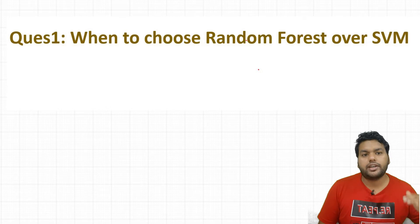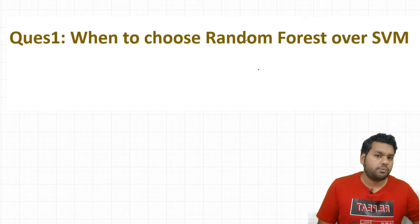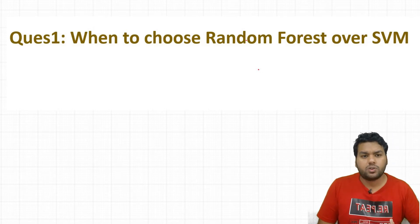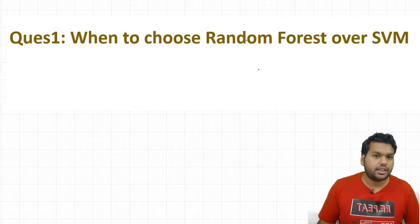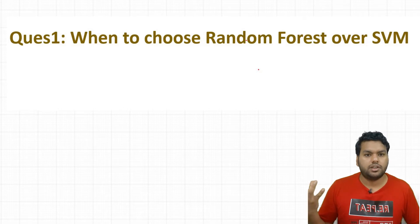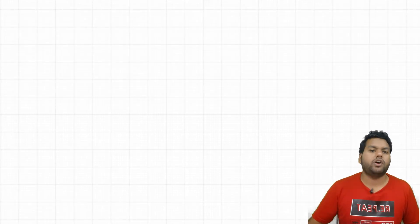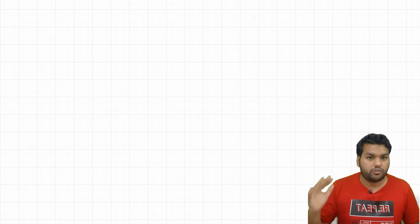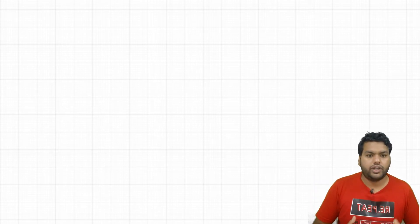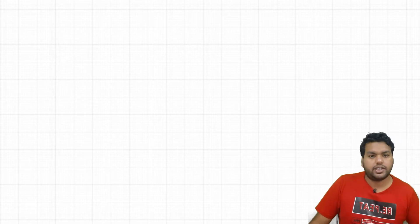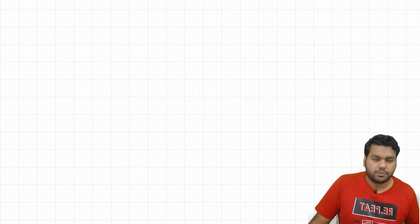The third point is that when we have sparse features — a lot of sparsity in the data — random forest does not work as well compared to SVM. In that case we should use SVM. Also, in cases where we identify the best kernel for the problem — for example, if we find an RBF kernel is best suited — then SVM works well compared to random forest. But if we have no information about the kernel, in many cases random forest works well provided the data is not too sparse.